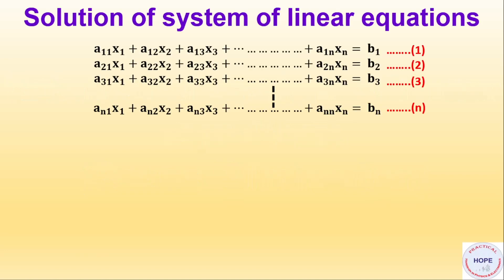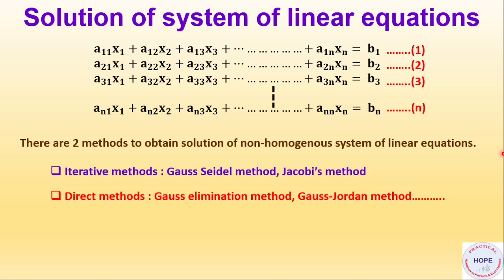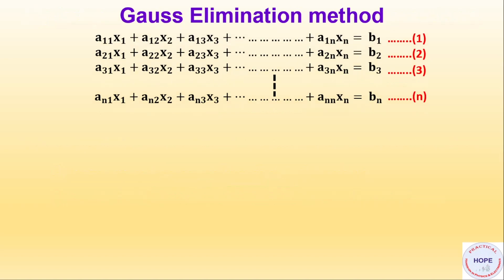Say these are the equations that we need to solve. These are n equations and we need to find n solutions x1 to xn. There are two methods to obtain solution of a non-homogeneous system of linear equations: first, iterative methods; second, direct methods. We are going to focus on the Gauss elimination method.